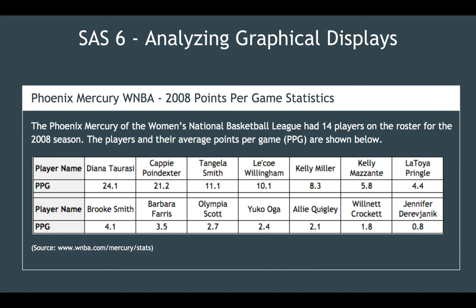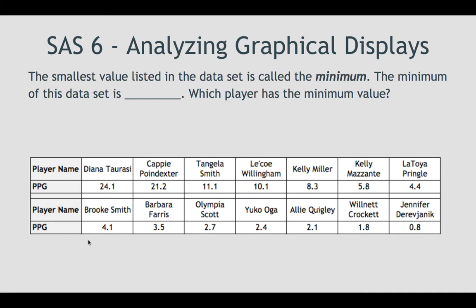We have a table of points per game for the Phoenix Mercury Women's National Basketball Association team back in 2008. They had 14 players on the roster for that season, and the players and their average points per game are shown in this table. The smallest value listed in a data set is called the minimum. I write this down so that you can look at it and write it in your notes for the test. Remember, we have cheat sheets for the test.